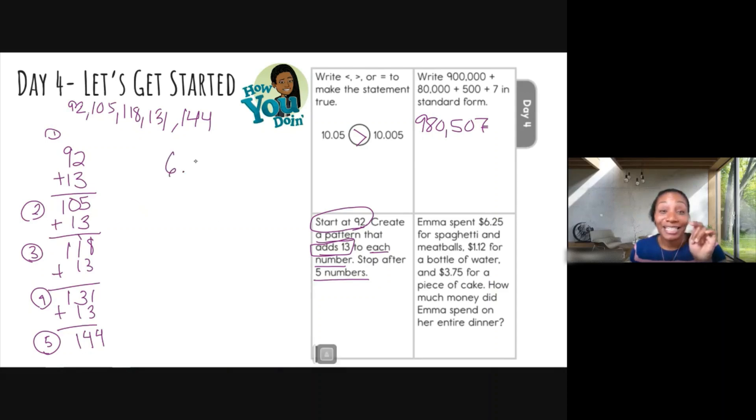So we have $6.25, decimals, we need to line those decimals up. I have $1.12 and $3.75. We're going to add this up because it wants to know how much she spent all together. So I like to add, there's big numbers. 5 plus 5 is 10 plus that 2 is 12. Carry the 1. 7, 8, 9, 10, 11. Carry the 1. And 6, 7, 8, 9, 10, 11. And bring down my decimal. So this girl spent $11.12 on her entire dinner.